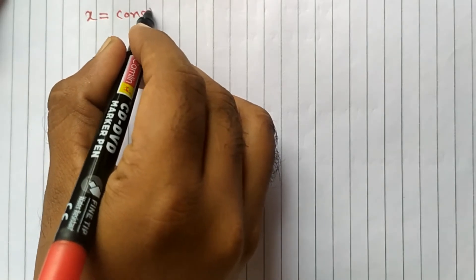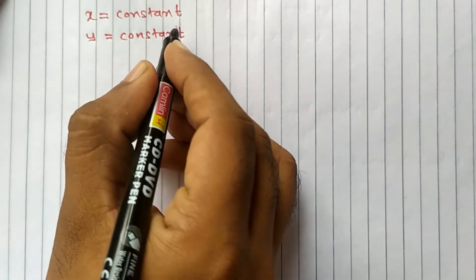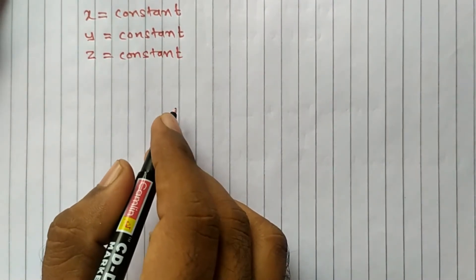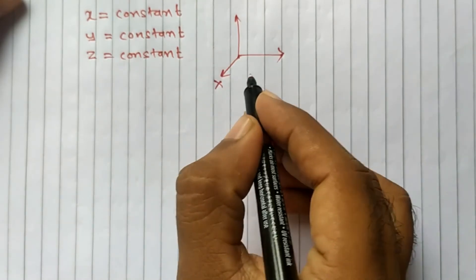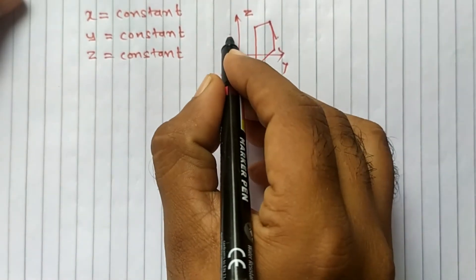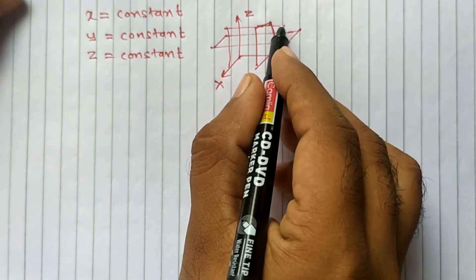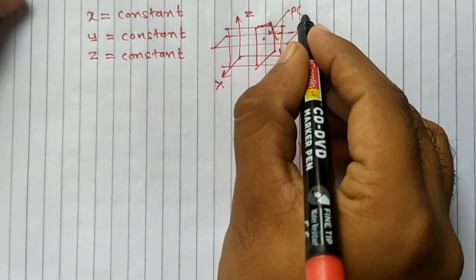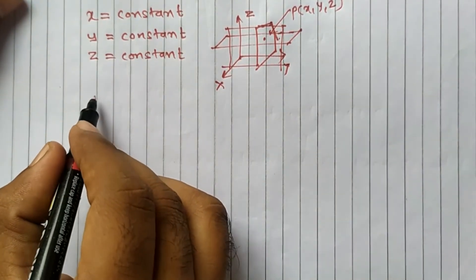As you know, in the Cartesian coordinate system, x equals constant is one plane, y equals constant is another plane, and z equals constant is a third plane. The intersection of these planes gives a point. You can recall the diagram: there was a plane, another plane, and a vertical plane, whose intersection was point P with coordinates x, y, z.